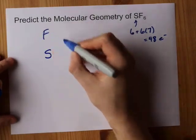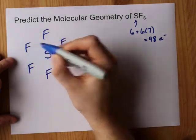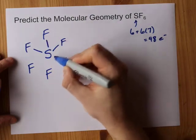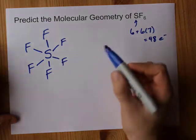Sulfur sits in the middle, and the fluorines surround it. I like single-bonding my central atom to all of the outer atoms first. That uses up 2, 4, 6, 8, 10, 12 of the 48 electrons.